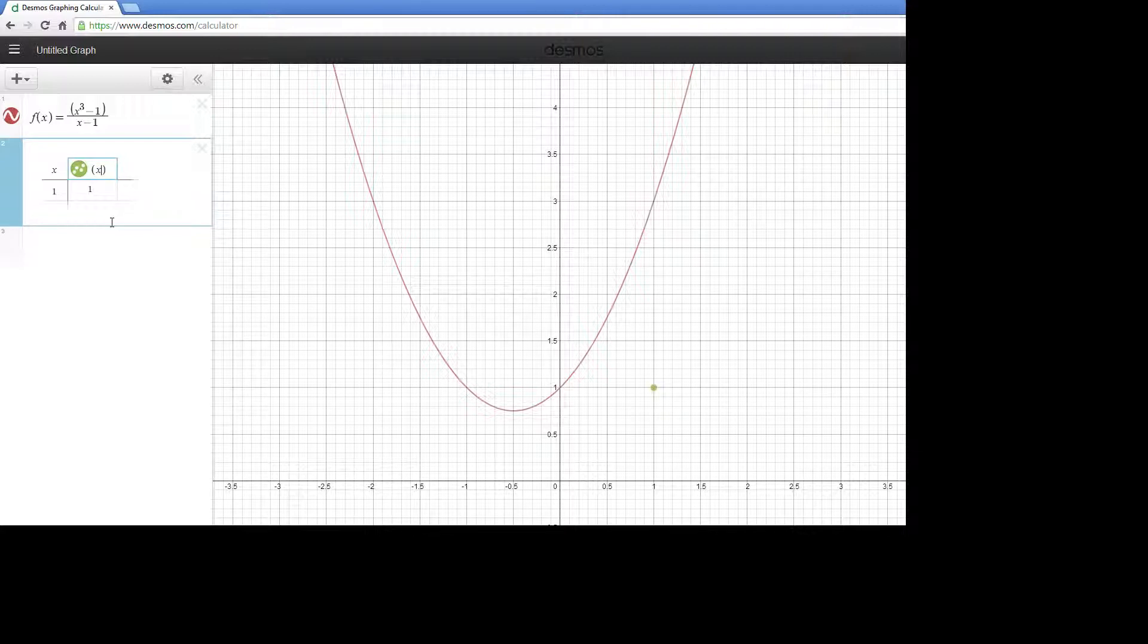We want x³ - 1 divided by x - 1. You can see it's telling us that it's undefined right at 1, but remember the limit really doesn't care